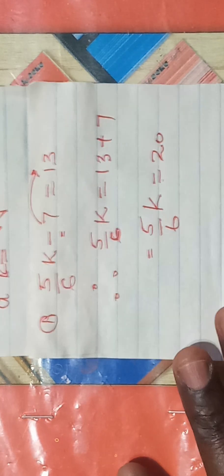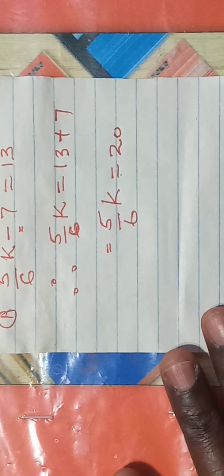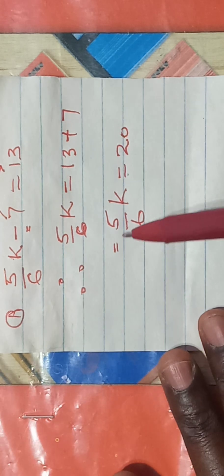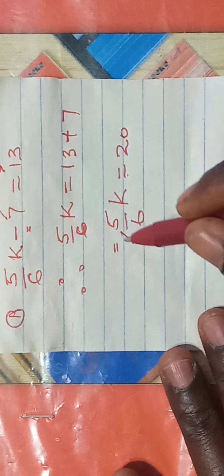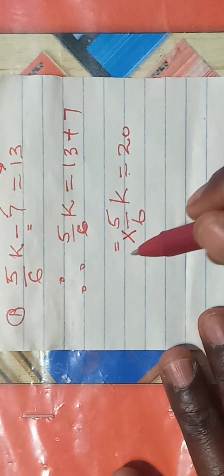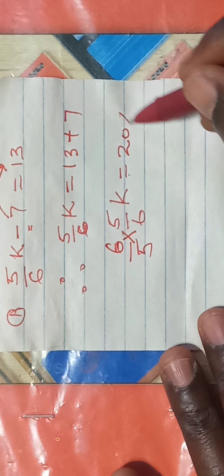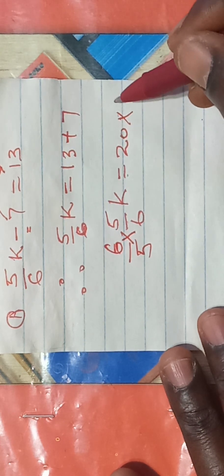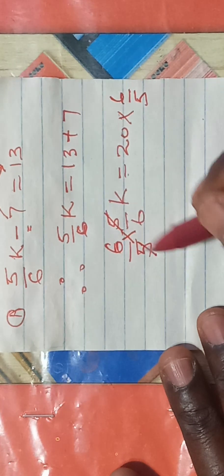Then, what do you do after that? Multiply both sides by the reciprocal of 5 over 6. So that is to say, you multiply the reciprocal of 5 over 6 would be 6 over 5. Multiply by 6 over 5.